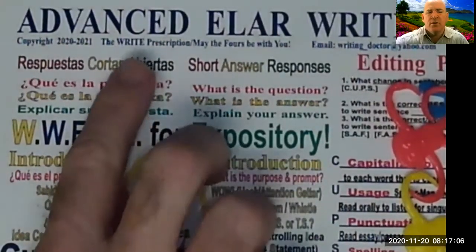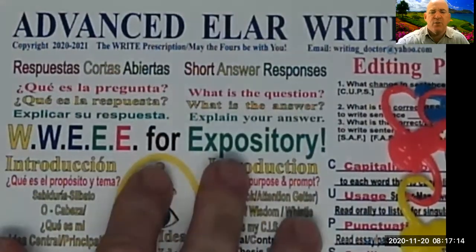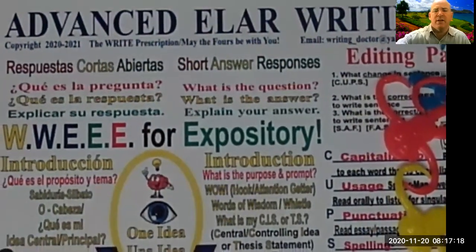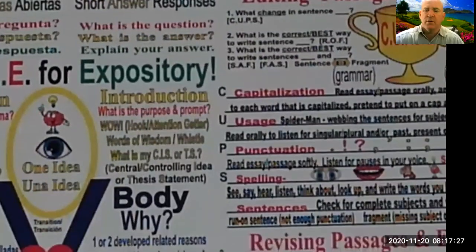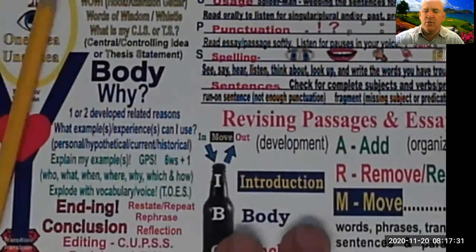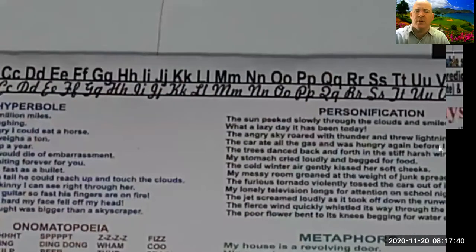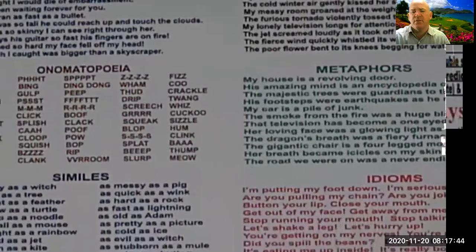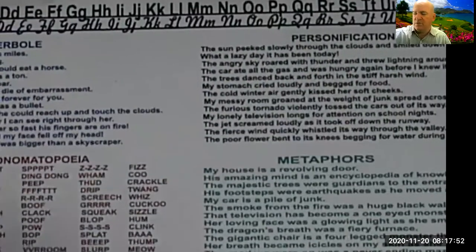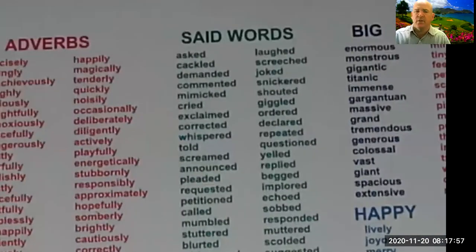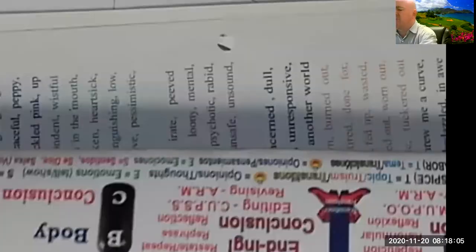These guides are on my website under the most popular English products. When you go to www.therightprescription.com, you'll be able to find these folders and I can send you a set of 25. They're really cool because they have the process of expository on the left, the editing plans using monkeys on the right with cups, revising on the lower right with 'arm' — add, remove, replace, move. On the bottom you'll see the alphabet in print and cursive, several examples of different types of figurative language, a way to practice dialogue, and a glorified thesaurus inside with lots of overused big words and better choices.